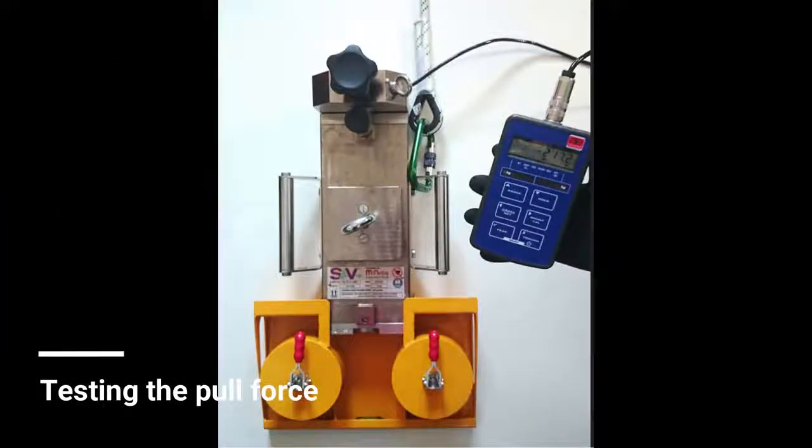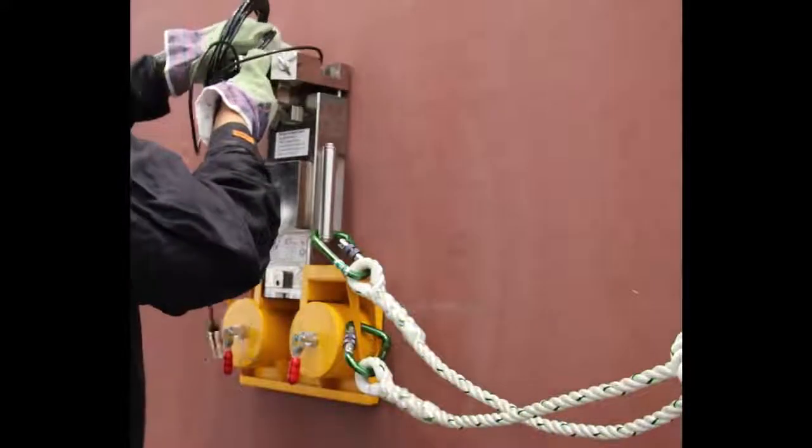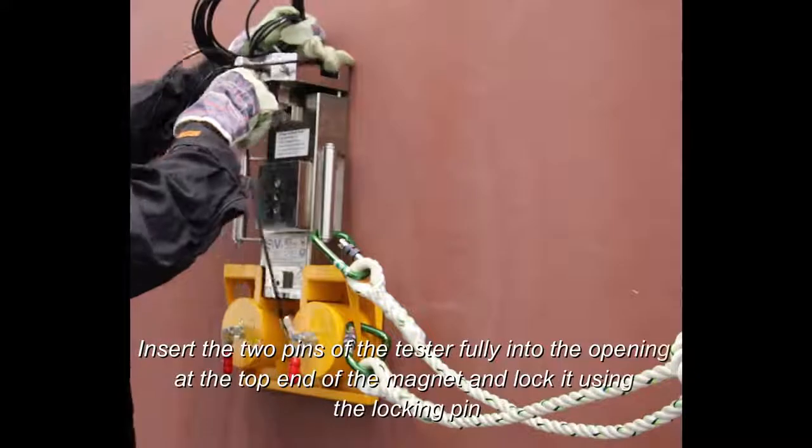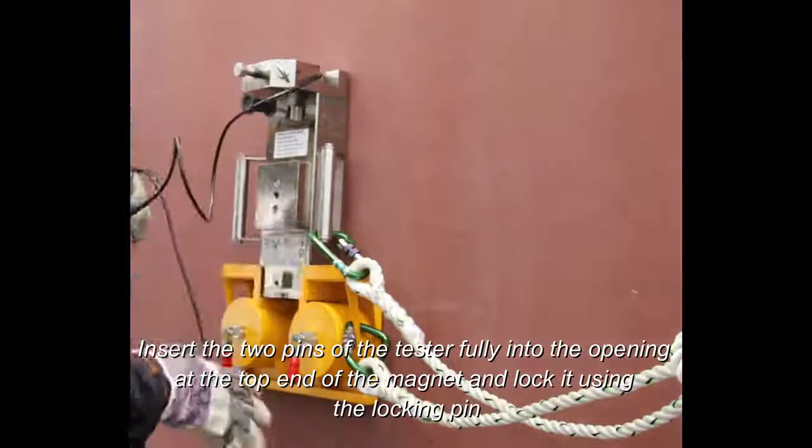Testing the pull force. Place the pull force tester on top of the control lock. Insert the two pins of the tester fully into the opening at the top end of the magnet and lock it using the locking pin.